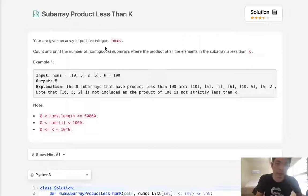You are given an array of positive integers, nums. Count and print the number of contiguous subarrays where the product of all elements in the subarray is less than k.